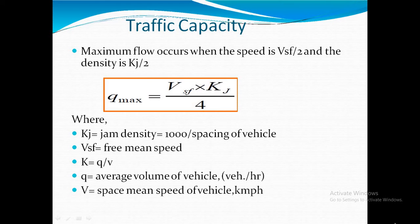First, what is the traffic capacity? How do we identify traffic capacity? Maximum flow occurs when the speed is free mean speed divided by 2 and the jam density divided by 2. Here VSF is the free mean speed upon 2, and KJ is the jam density. The formula is: Q_max equals VSF multiplied by KJ upon 4.